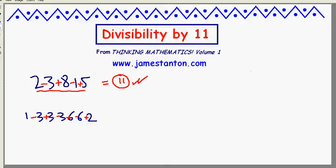1 minus 3 is negative 2. Plus 3, minus 3, I'm not going to worry about. Plus 6, minus 6, I'm not going to worry about. So it's negative 2 at the beginning, plus 2 makes 0. That's a multiple of 11. So the claim is, the original number is a multiple of 11.